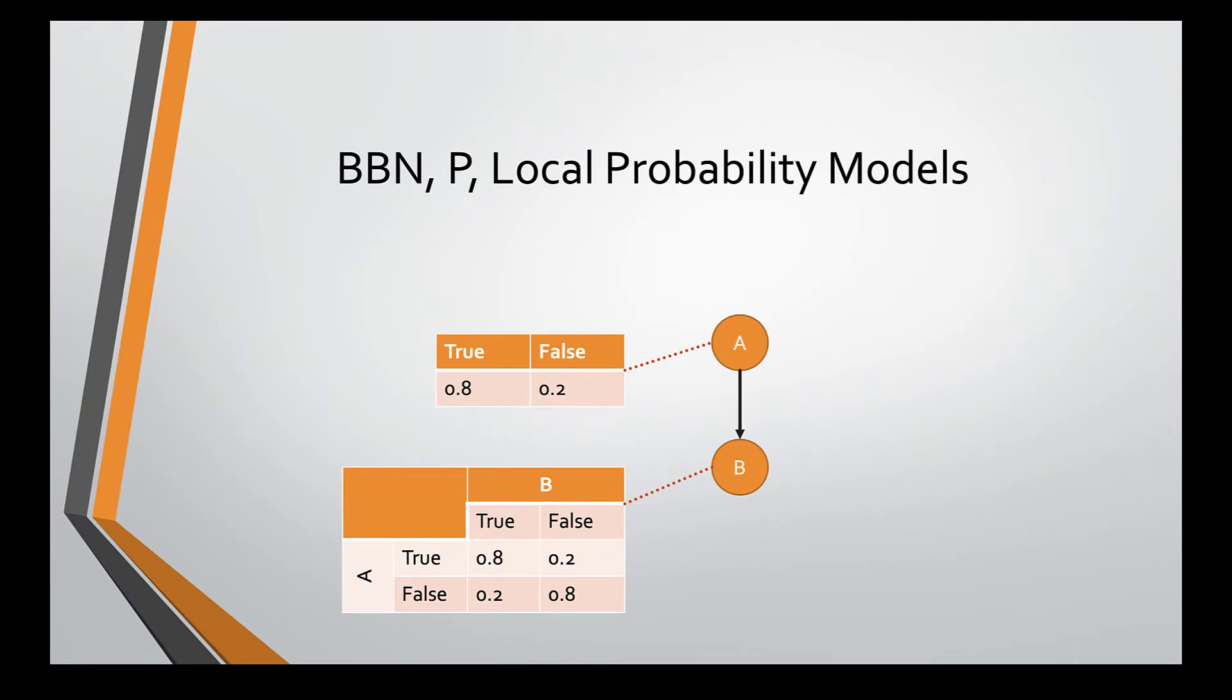Associated with each node or variable is the local probability model. The local probability model specifies the distribution of the variable given its parents. For discrete variables, the local probability model comes in the form of conditional probability tables, or CPTs. Here, we have a very simple graphical structure of a Bayesian network. There are only two nodes, A and B. Each of these variables are binary since each of them can only have two states, true or false.